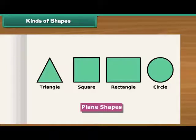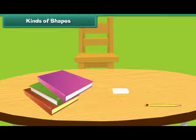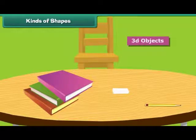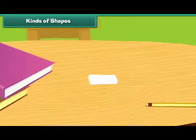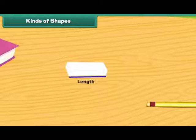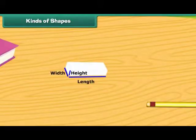Plane shapes are also known as 2D objects. Solid shapes are also known as 3D objects. All 3D objects have depth which 2D objects do not have.